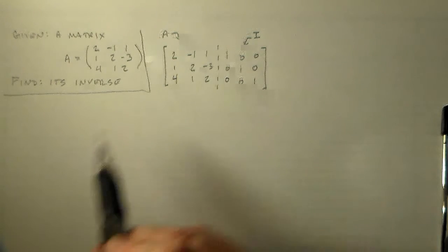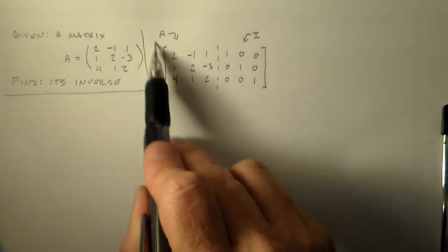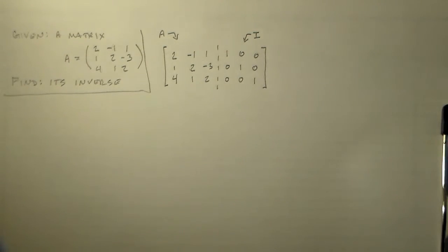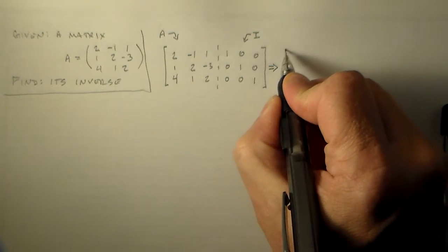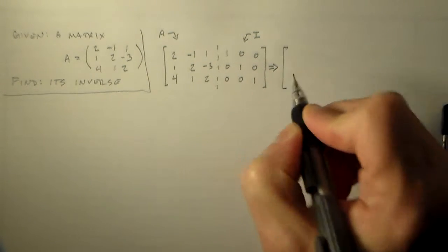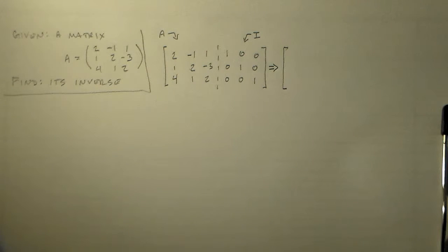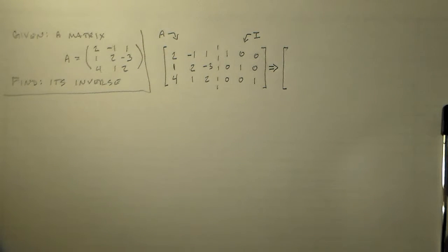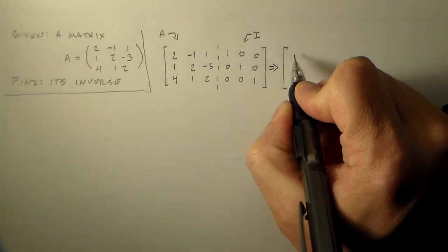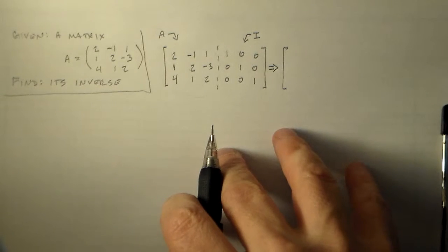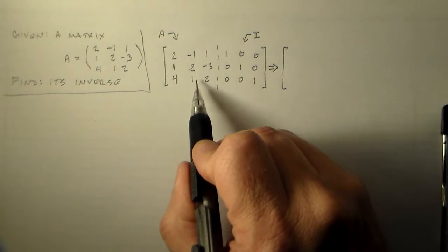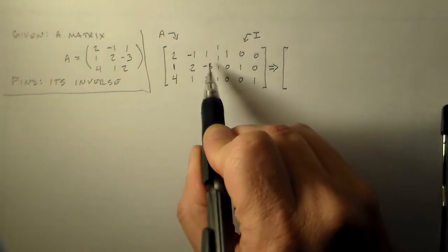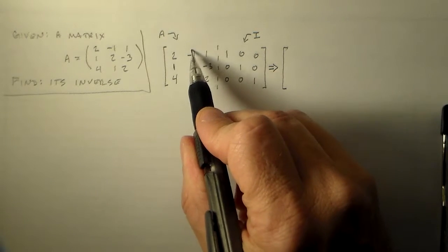So I want to get all this to look like this, and then over here I'll have A to the minus 1, I'll have the inverse matrix. So I can take what I begin with here and what I end with here, multiply them together, and get the identity matrix. Fairly simple conceptually. In fact, working this is fairly simple as well. It's just a mechanical procedure.